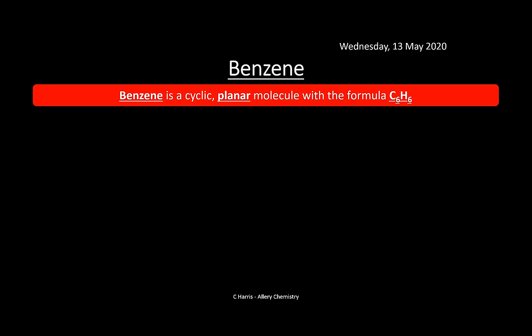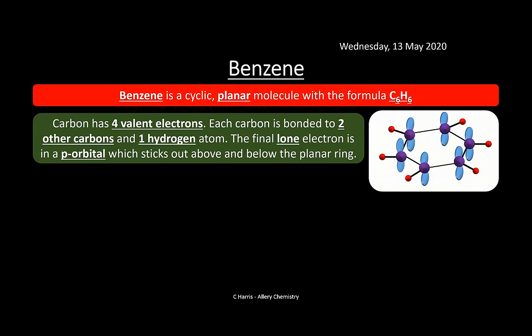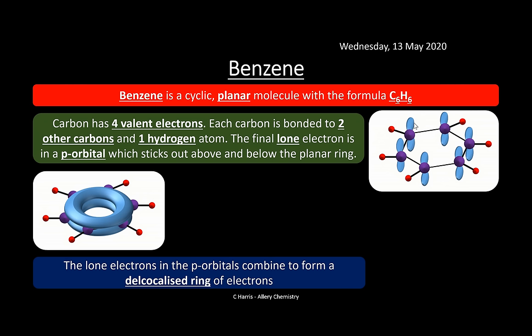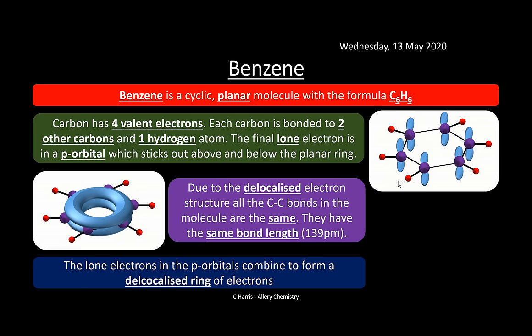Benzene is a cyclic planar molecule with the formula C₆H₆. Each carbon has four valence electrons and is bonded to two other carbons with one hydrogen atom. The final lone electron occupies a p orbital which sticks out above and below the planar ring. These lone electrons in the p orbitals combine to form a delocalized ring of electrons. As a result, all C–C bonds in the molecule are the same length: 139 picometres.